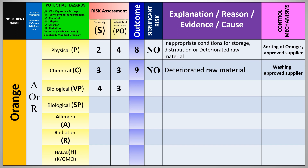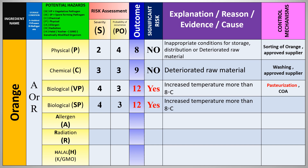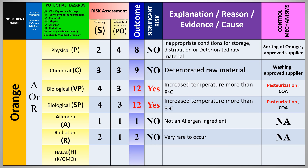Biological hazard for orange: severity 4 × probability 3 = 12 — this is a significant risk. The cause is vegetative pathogen or spore-forming growth due to temperature exceeding 8°C at ambient storage. Control measures are pasteurization or certificate of analysis. The allergen result is 1 — not significant. Radiation is very rare to occur, and halal is not applicable. Risk assessment for the orange is now complete.